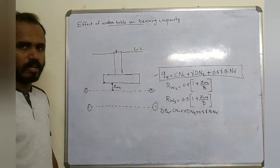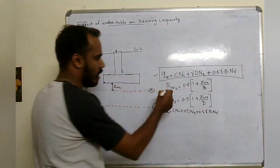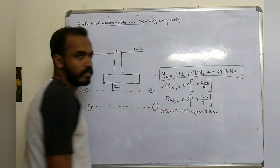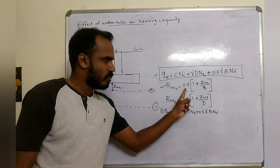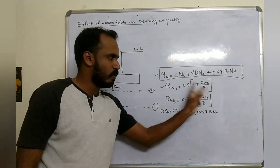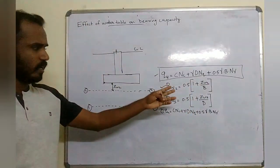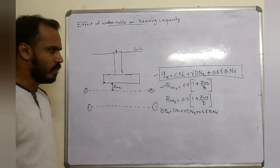The correction factor is Rw2. The expression is 0.5 into (1 plus Zw2 divided by B), where B is the footing width and Zw2 is the distance from the base of the footing to the water table.